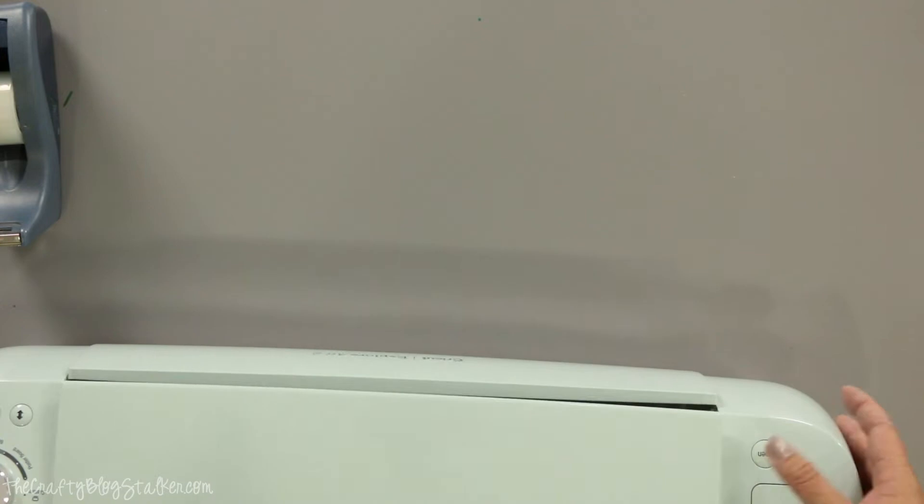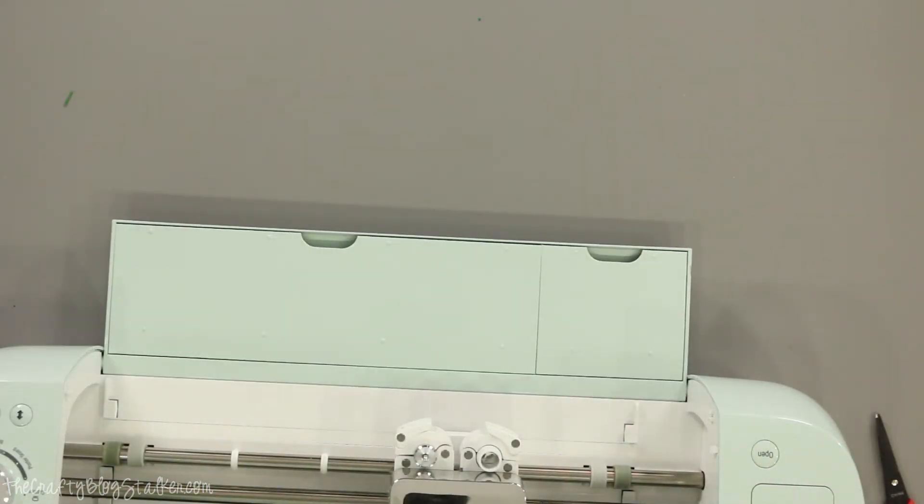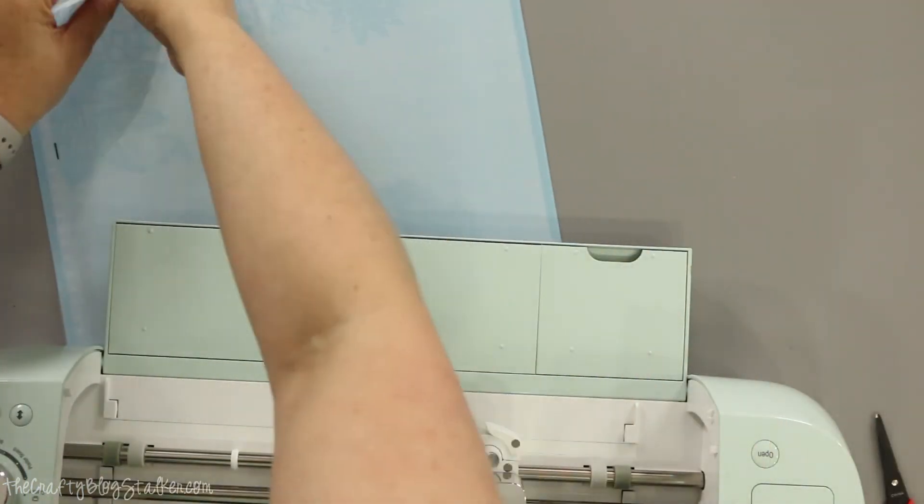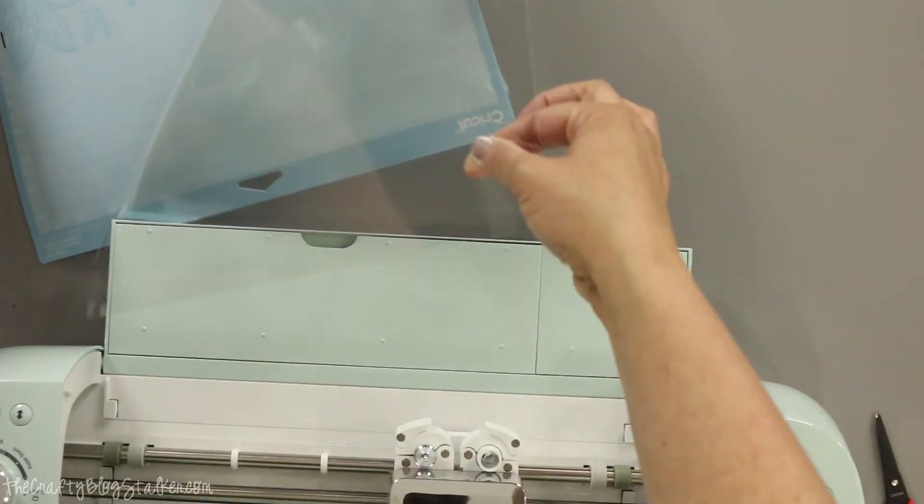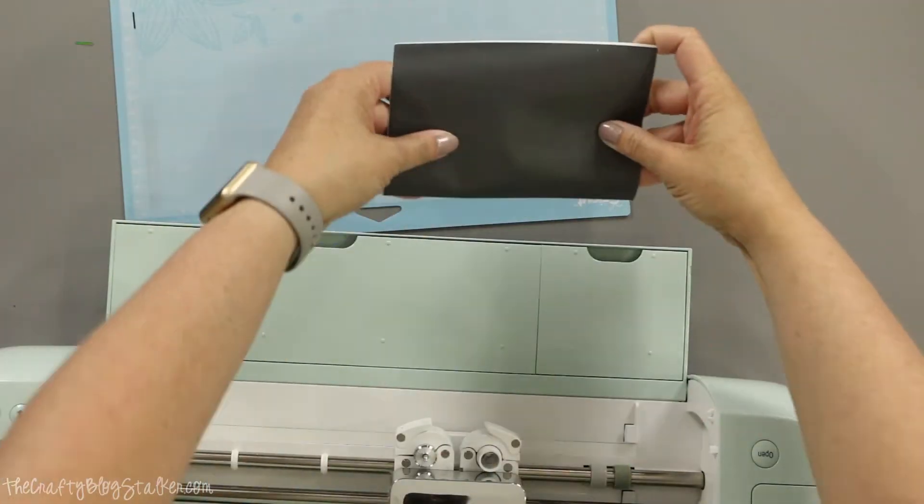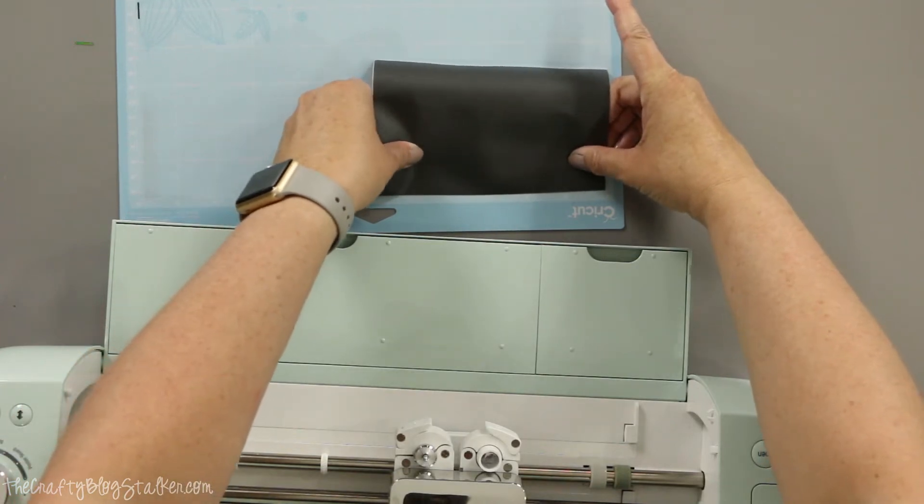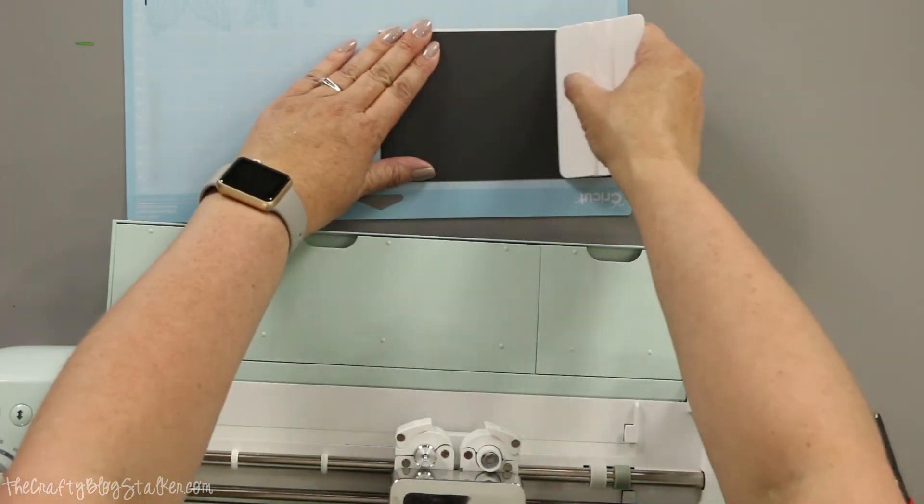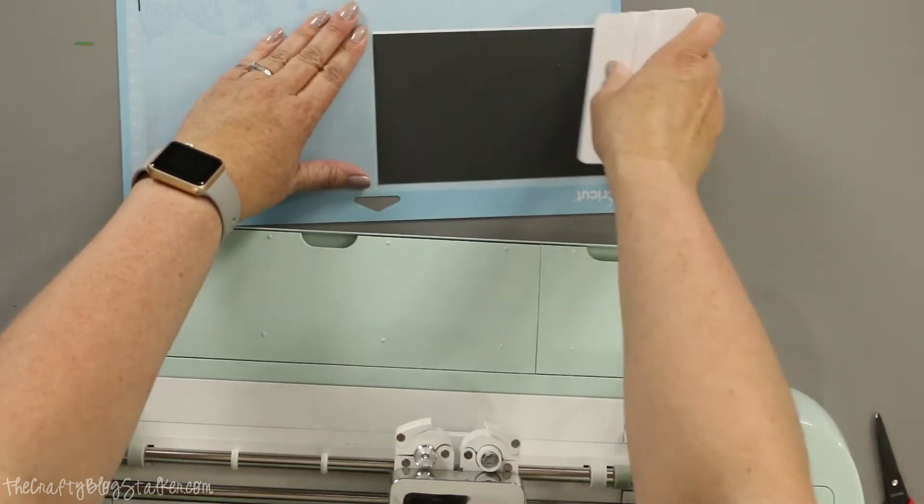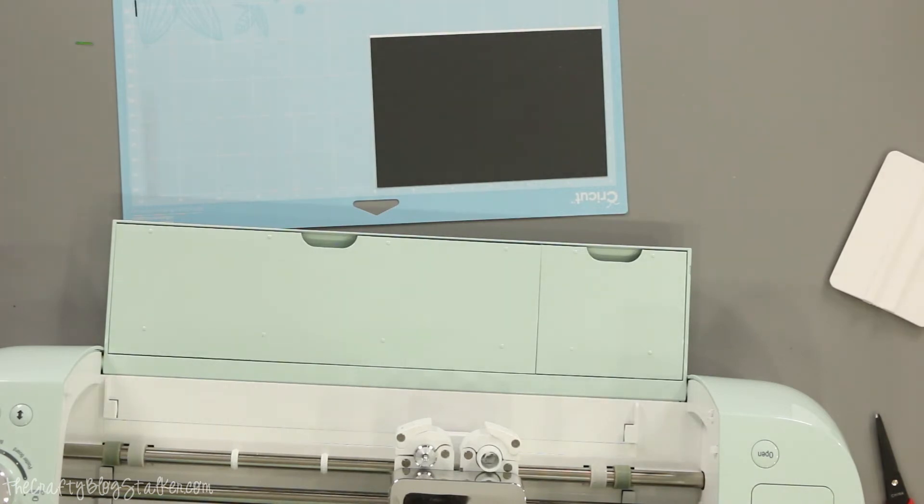So I'm going to open the Cricut again. I'm going to get my mat and I have my black vinyl. I'm using the same black, so this time I know I need to cut it twice. And I've got my file here that we are all ready to cut.